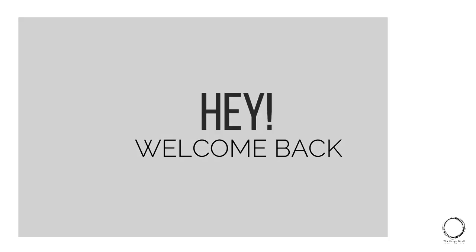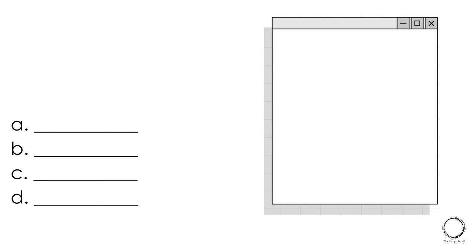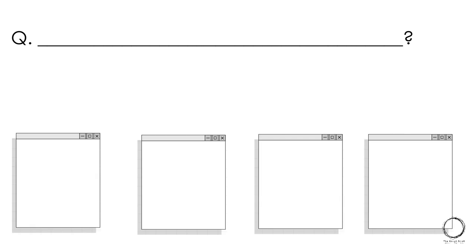Welcome back. Today we are going into another really important topic which was mentioned in the last video: materials and building construction. After analyzing the NATA attempt one paper, you will be displayed with an image of the materials or architectural terms and you will have to choose the right answer between four options, or they'll mention the name of the material and you will have to choose the right image.